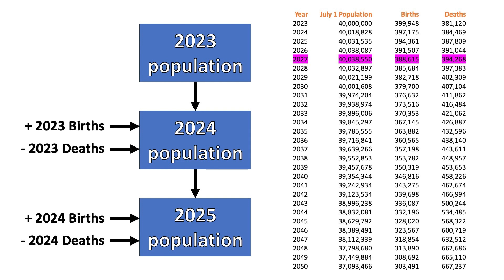If we continue our assumption that the birth rate will decrease by three quarters of a percent per year as it has done for the past several years, and if we assume the excess deaths remain 20% higher than the UN projections, then the population of Canada will max out in 2027. And from that point on, the death rate will be higher than the birth rate. And by 2050, the population of Canada will be 7% lower than it is today.